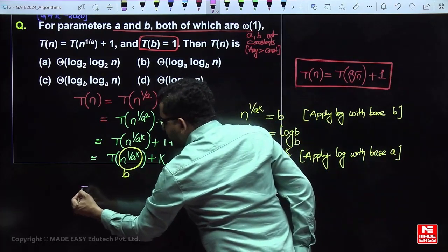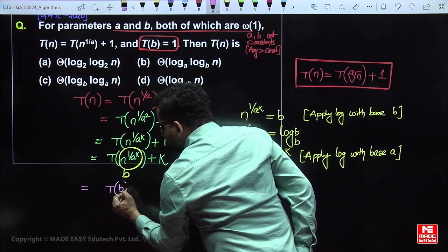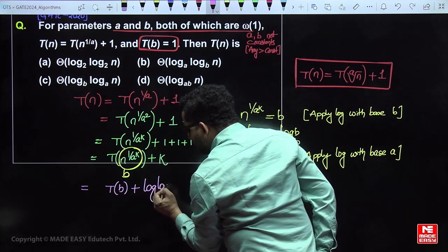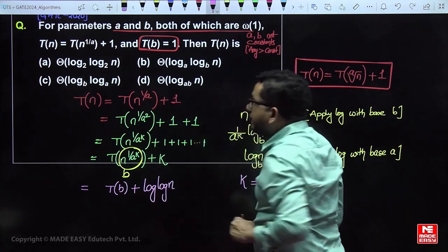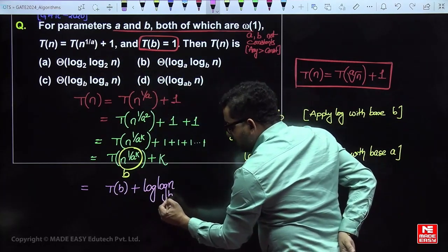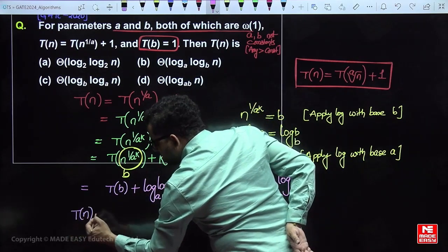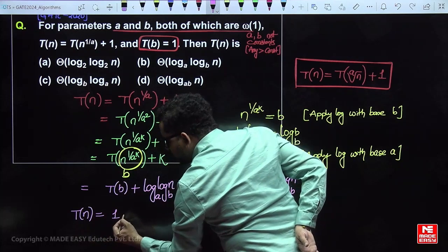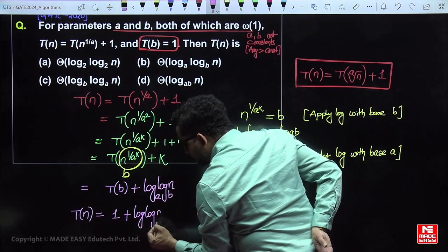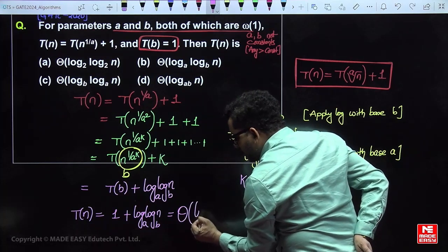Since T(b) = 1, the full recursion becomes T(n) = T(b) + k = 1 + log log n, where the inner log is base b and the outer log is base a. This is asymptotically equal to log log n.